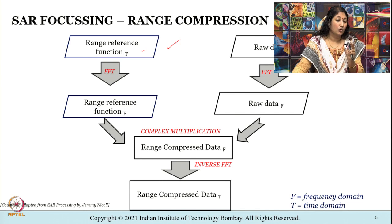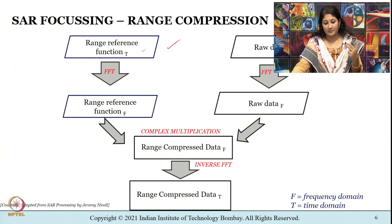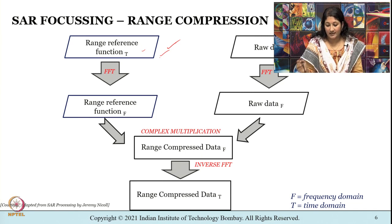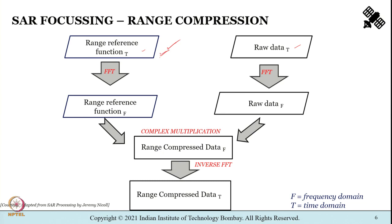The range reference function represents the original chirp transmitted by the antenna as a series of complex numbers. Both the raw data and the range reference function are converted from the time domain to the frequency domain using FFT, compression is carried out in the frequency domain, and then the data is converted back to the time domain using inverse FFT.